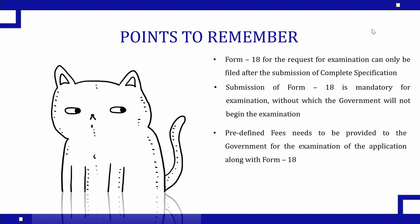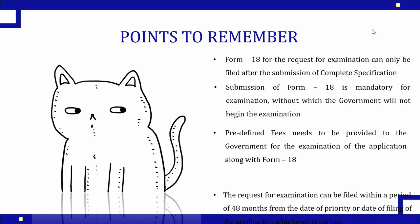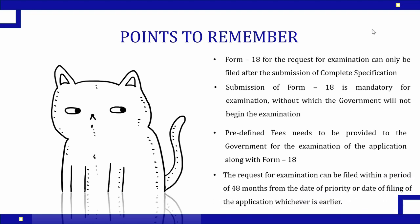The government is not going to do the examination free of cost, so you need to submit the fees which are predefined on the government website, along with Form 18. The last important point is that you have 48 months from the priority date or the filing date for the submission of this form. The earlier you submit it, the sooner the government will take it under examination. After 48 months, if the examination form is not submitted, your application gets abandoned and there is no use of your idea.